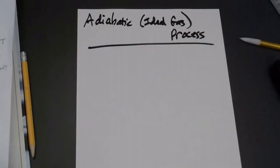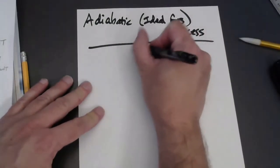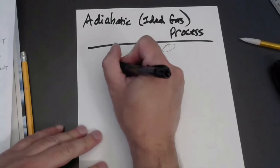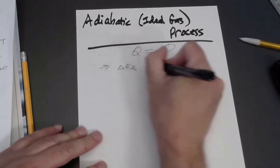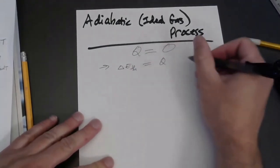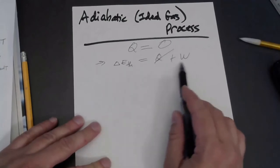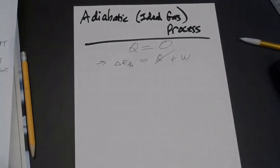Now we're ready to look at an adiabatic process for an ideal gas. We've already looked at isochoric (constant volume), isobaric (constant pressure), and isothermal (constant temperature) processes. Now, lastly, adiabatic — another very common process. The definition is simple: the heat transfer between your gas and its surroundings is zero. In the first law, the change in thermal energy comes from heat flowing in or out, or work done on or by the gas. If there's no heat flow, then whatever work is done on the gas is the change in thermal energy.